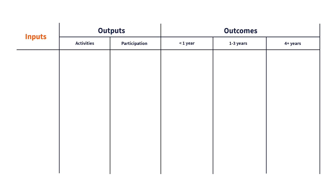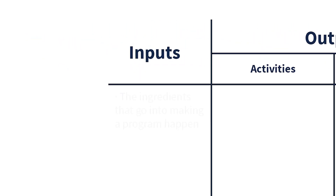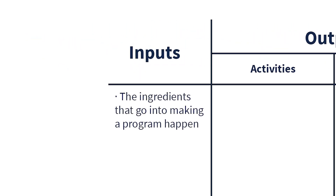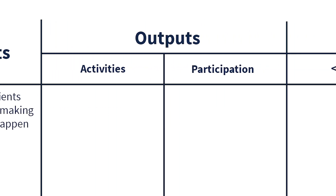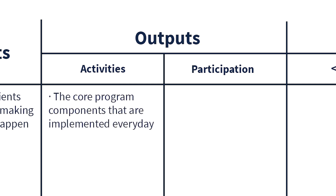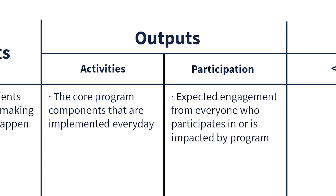First, let's cover inputs. Inputs are all of the key ingredients that go into making programming happen. Then there are outputs. Outputs can be divided into activities and participation. Activities are the core program components that you implement every day, while participation is the engagement that you are expecting to see from everyone who engages with your activities or who is affected by your program.